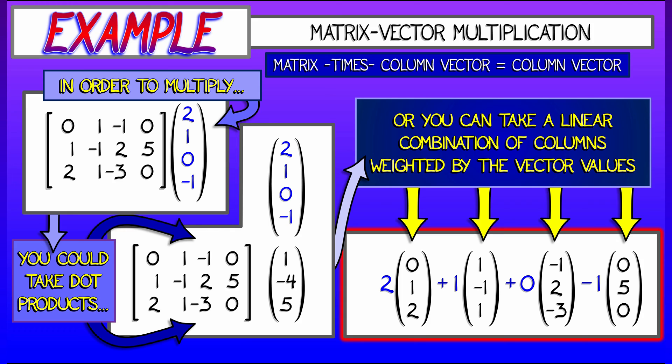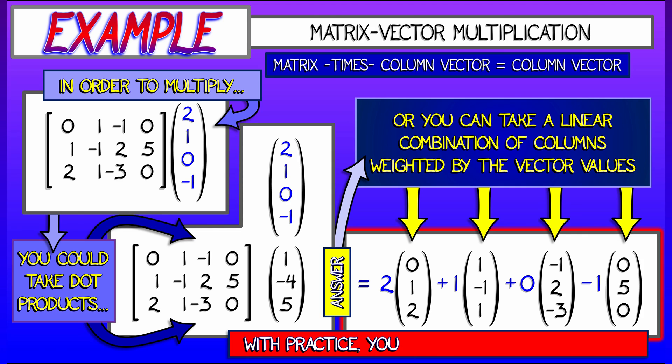And adding together the elements across a row is just like taking a dot product of the row of the matrix with that column vector. And you can check that the answer that you get in this case is the same, no matter which way you do it. What's nice about this second approach is that you can often do it in your head. That can be helpful.